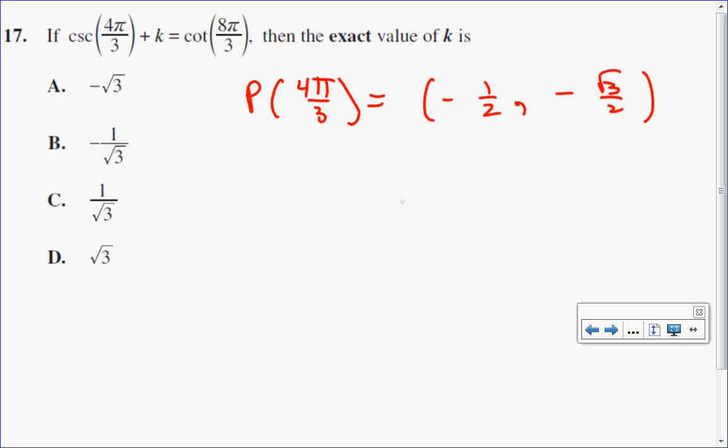Now cosecant is the reciprocal of sine. Sine of 4π over 3 is equal to negative root 3 over 2. So cosecant of 4π over 3 is negative 2 over root 3.